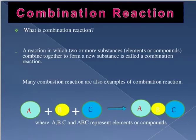In this video I'm going to explain the types of chemical reactions. In this slide I'm going to explain two types of chemical reactions — there are four, but we will discuss only two: combination reaction and displacement reaction. A combination reaction is one in which two or more substances, that is elements or compounds, combine together to form a new substance.